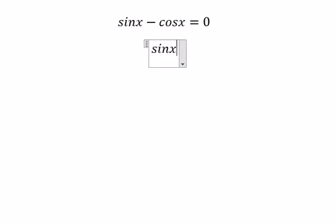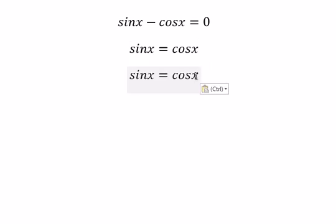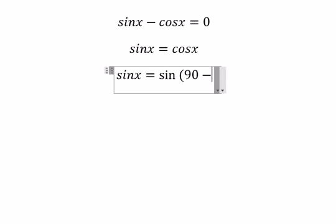For cosine s, we can substitute sine of 90 minus s, using the trigonometric identity.